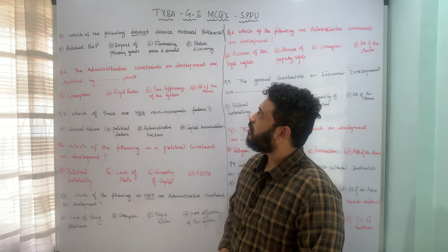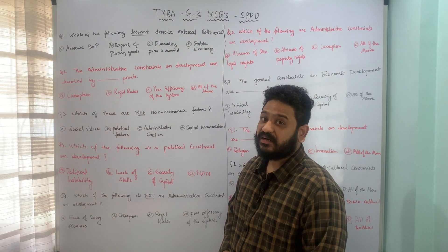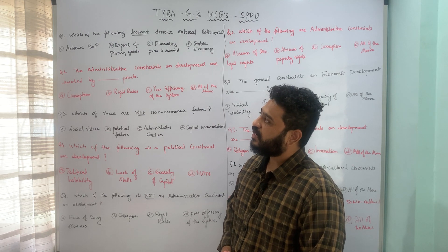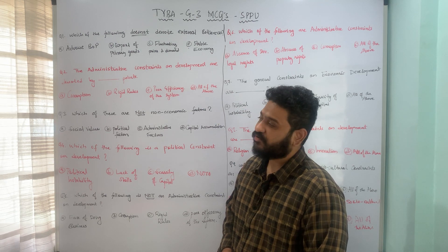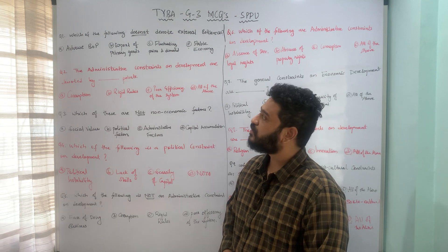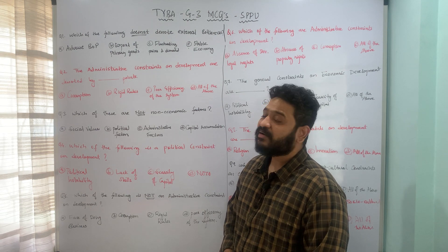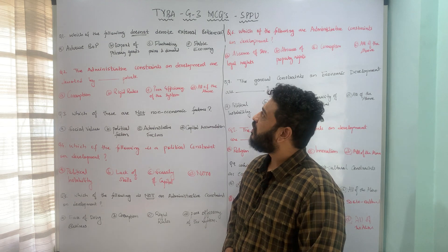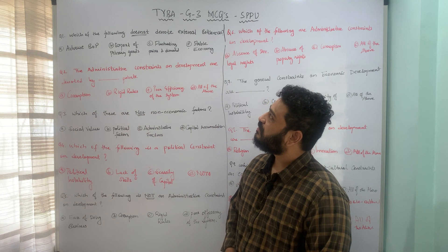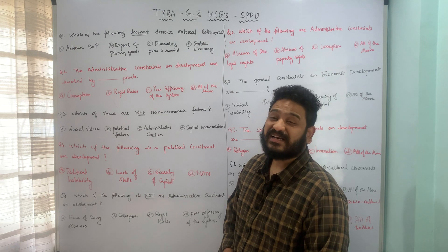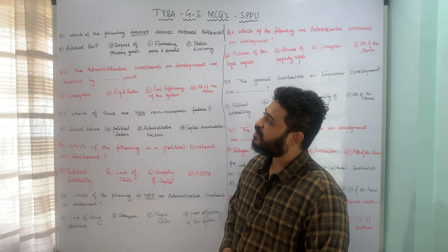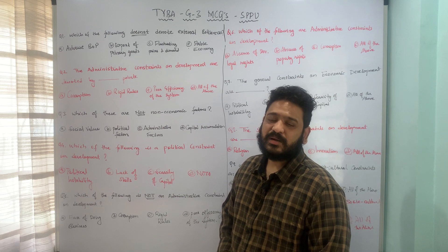The first question is: which of the following does NOT denote external bottlenecks? The options are: A) adverse balance of payment, B) exports of primary goods, C) fluctuating prices and demand, and D) stable economy. The first three are actually external bottlenecks.